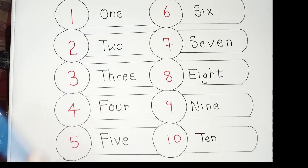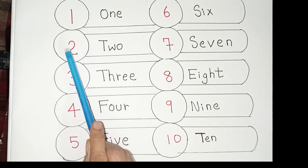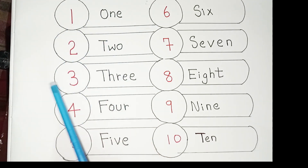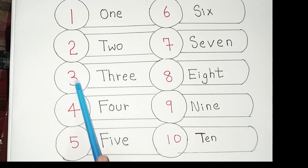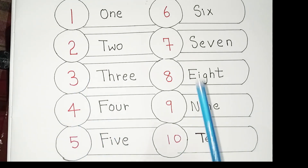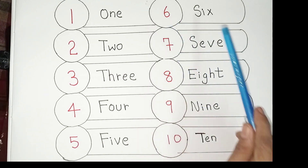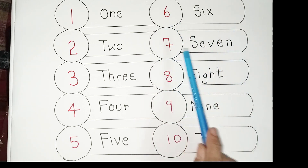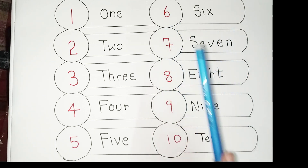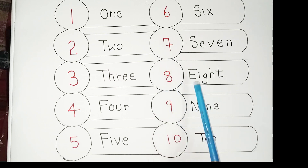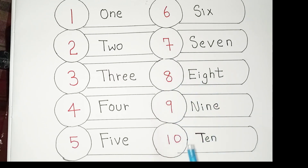Okay, let's say again: 1 O-N-E, 1. 2 T-W-O, 2. 3 T-H-R-E-E, 3. 4 F-O-U-R, 4. 5 F-I-V-E, 5. 6 S-I-X, 6. 7 S-E-V-E-N, 7. 8 E-I-G-H-T, 8. 9 N-I-N-E, 9. 10 T-E-N, 10.